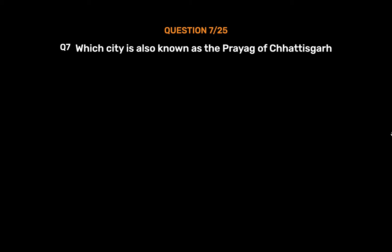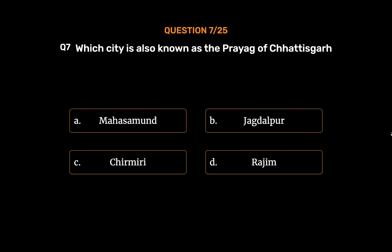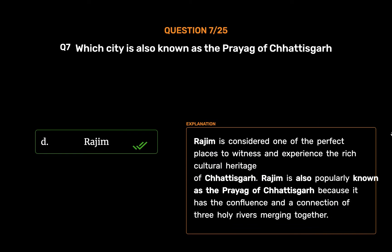Question No. 7: Which city is also known as the Prayagraj of Chhattisgarh? Option A: Mahasamund. Option B: Jagdalpur. Option C: Chamirri. Option D: Rajim. The correct answer is Option D: Rajim. Rajim is considered one of the perfect places to witness and experience the rich cultural heritage of Chhattisgarh. Rajim is also popularly known as the Prayagraj of Chhattisgarh because it has the confluence of three holy rivers merging together.